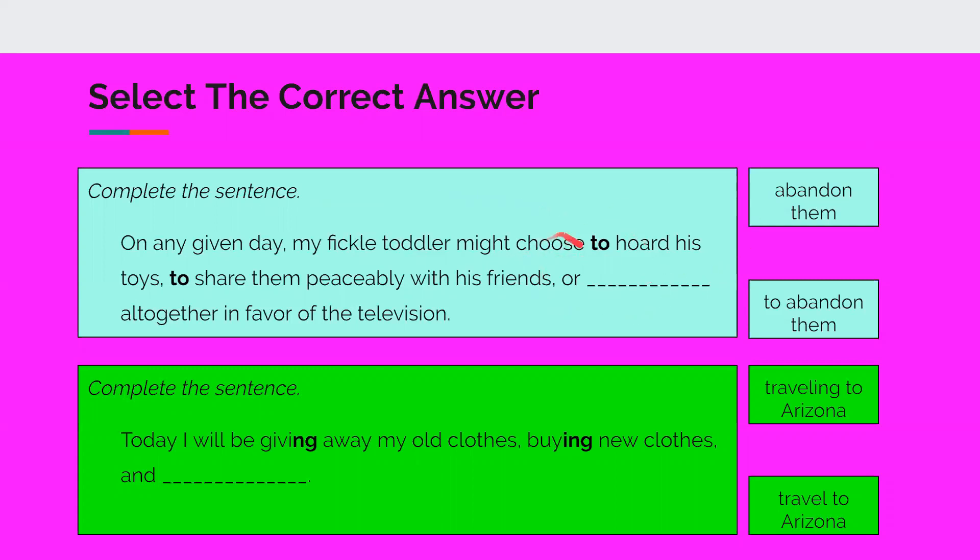So we have or abandon them all together in favor of the television or to abandon them. So what do we notice here is I helped you out a little bit by bolding too. So we see that the parallel structure is the word too. So it would be this answer, to abandon them, to continue the parallelism.